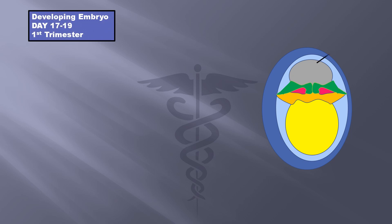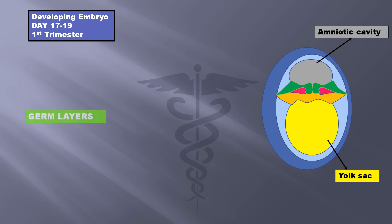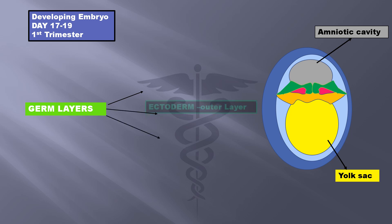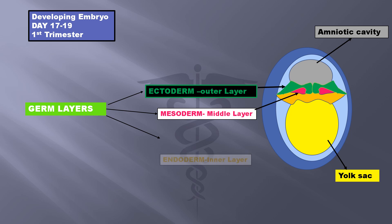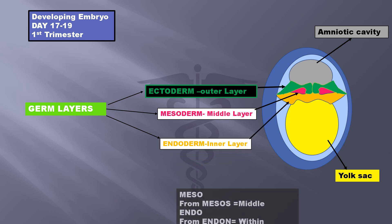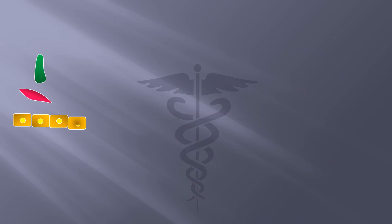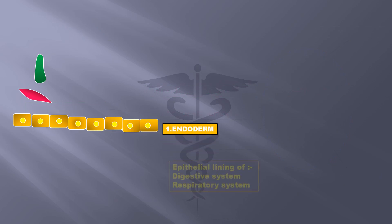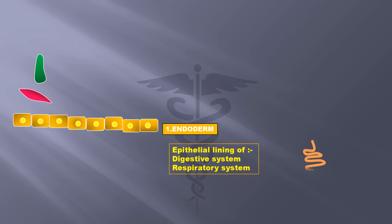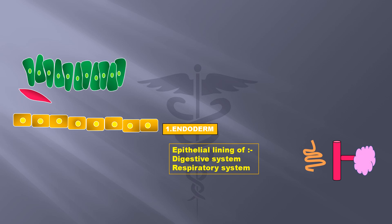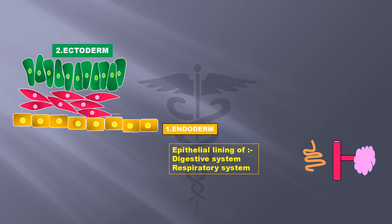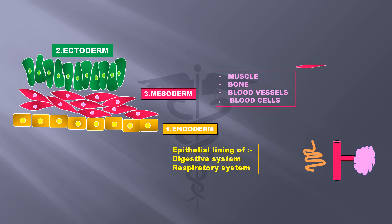This is a developing embryo around 17 to 19 days after fertilization. Above is the amniotic cavity, below the yolk sac. Three germ layers can be seen during this stage. The ectoderm is the outer layer, mesoderm is the middle layer, and endoderm is the inner layer. In Greek, mesos means middle and endon means within. The first layer of cells to be formed is the endoderm, which gives rise to structures like the epithelial lining of the digestive and respiratory systems. After this, the ectoderm forms. The last layer to be formed is the mesoderm, which gives rise to muscles, bones, blood cells, blood vessels, etc.